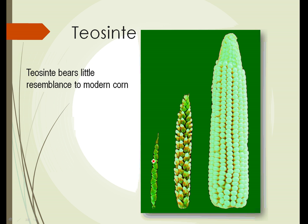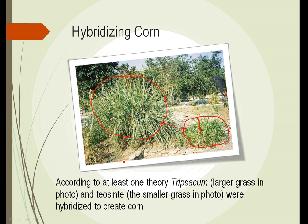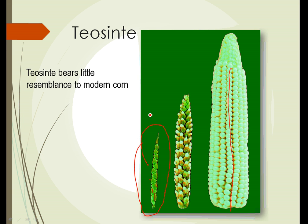Here we see Teosinte, and looking at it, you can see there's a single row of seeds. In modern corn, we have multiple rows of seeds. It's thought that Tripsacum contributed maybe the multiple rows of seeds, and between the two, modern corn developed.